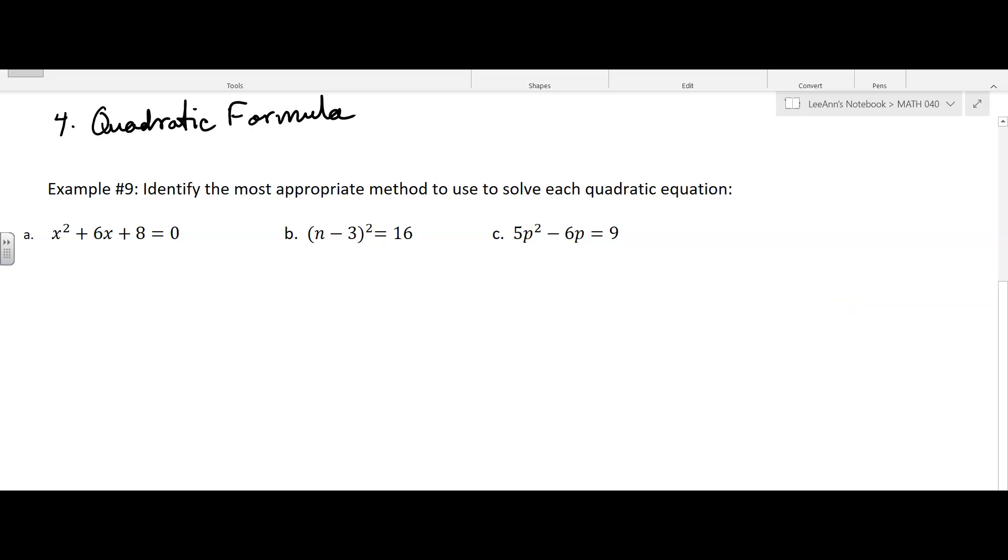So in example nine, it says, identify the most appropriate method to use to solve each quadratic equation. All right, well, I think this factors, right? Because you have two numbers, four times two, and four plus two adds up to six, so I would just factor it.